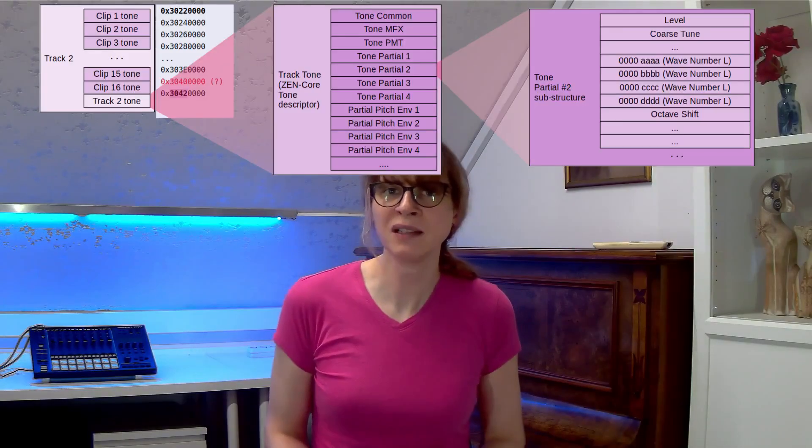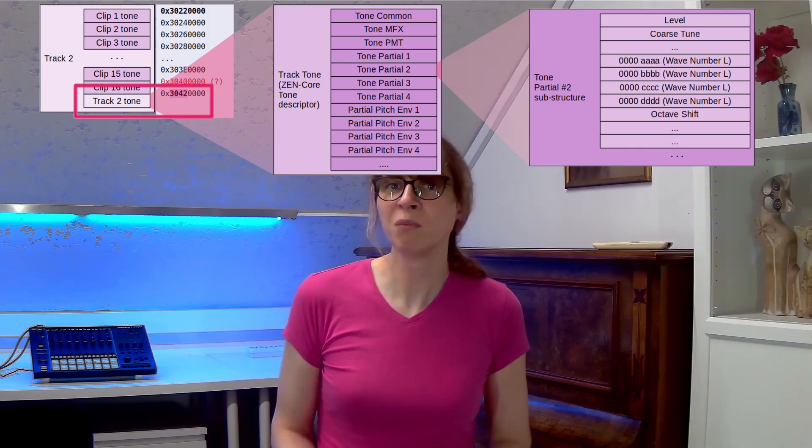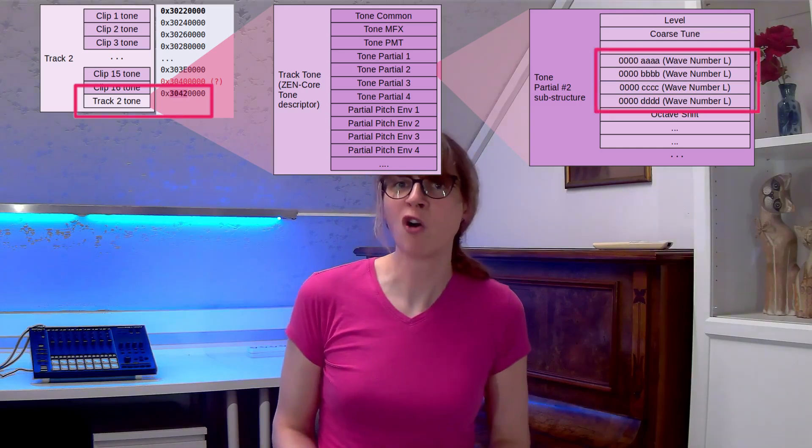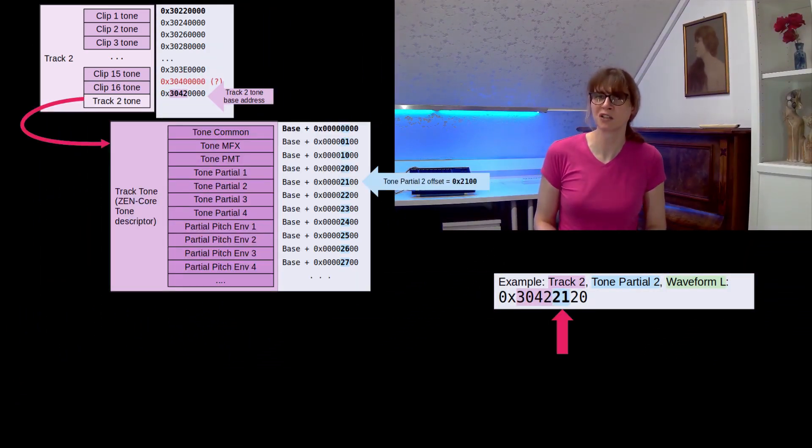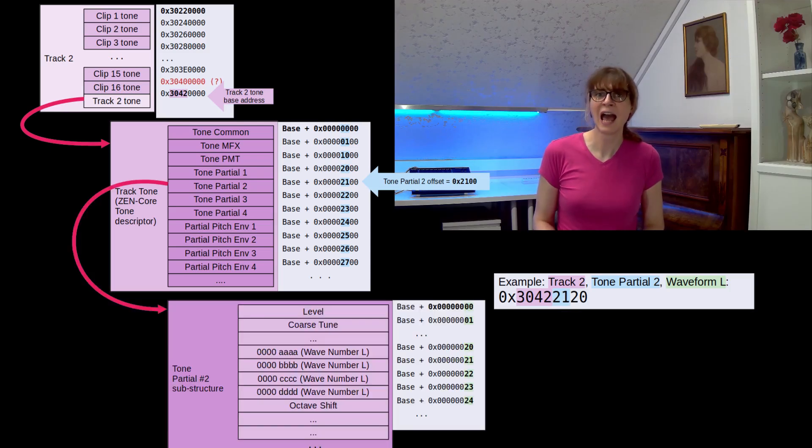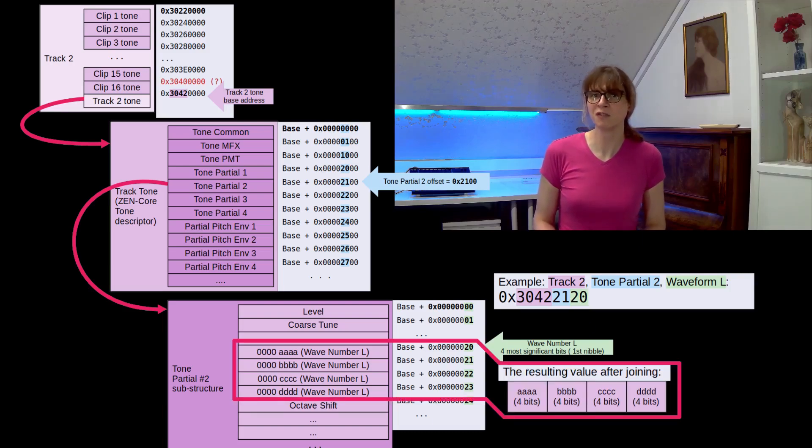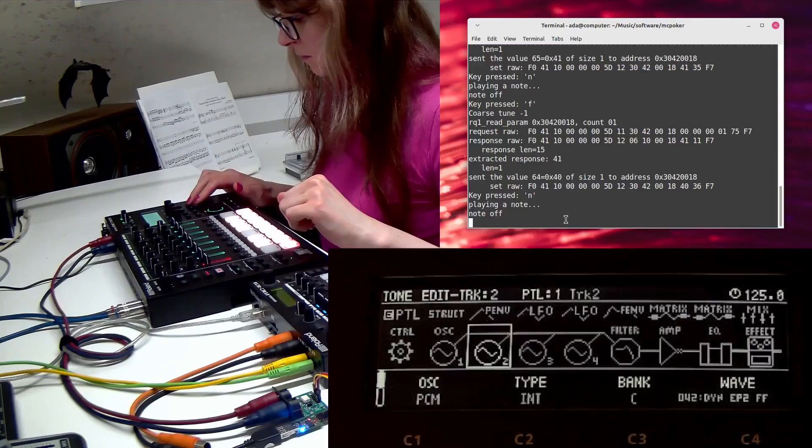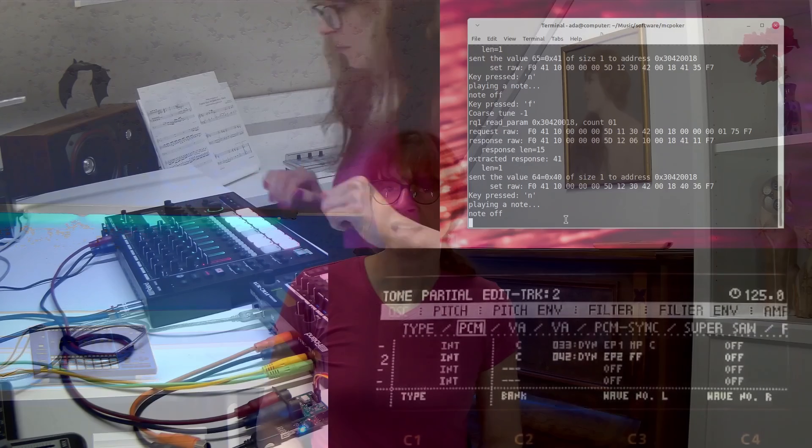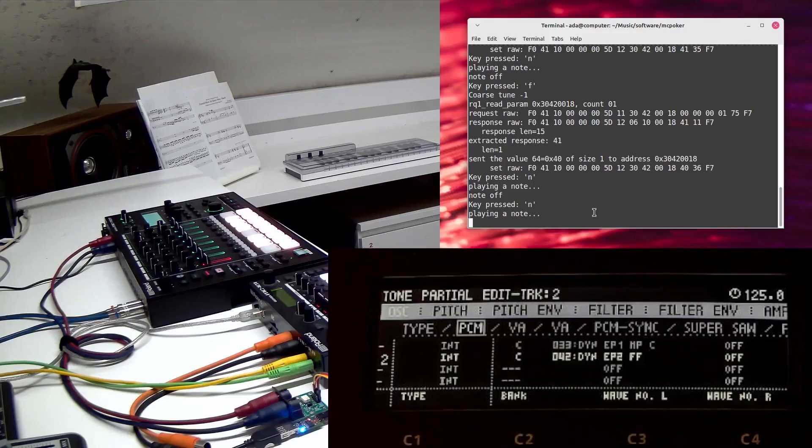In the second experiment, also in track number 2 tone, let's modify the tone's left channel waveform of partial number 2. This requires us to compute the offset of the tone partial number 2 substructure and the offset of wavenumber left field in that structure. This time, the read and written value will be split into 4 bytes but just 4 bits of each byte will be used. Again, I navigate in the sound menu to partial number 2 edit. Then I navigate to the subtab PCM. And you can see that the waveform changes with each message.